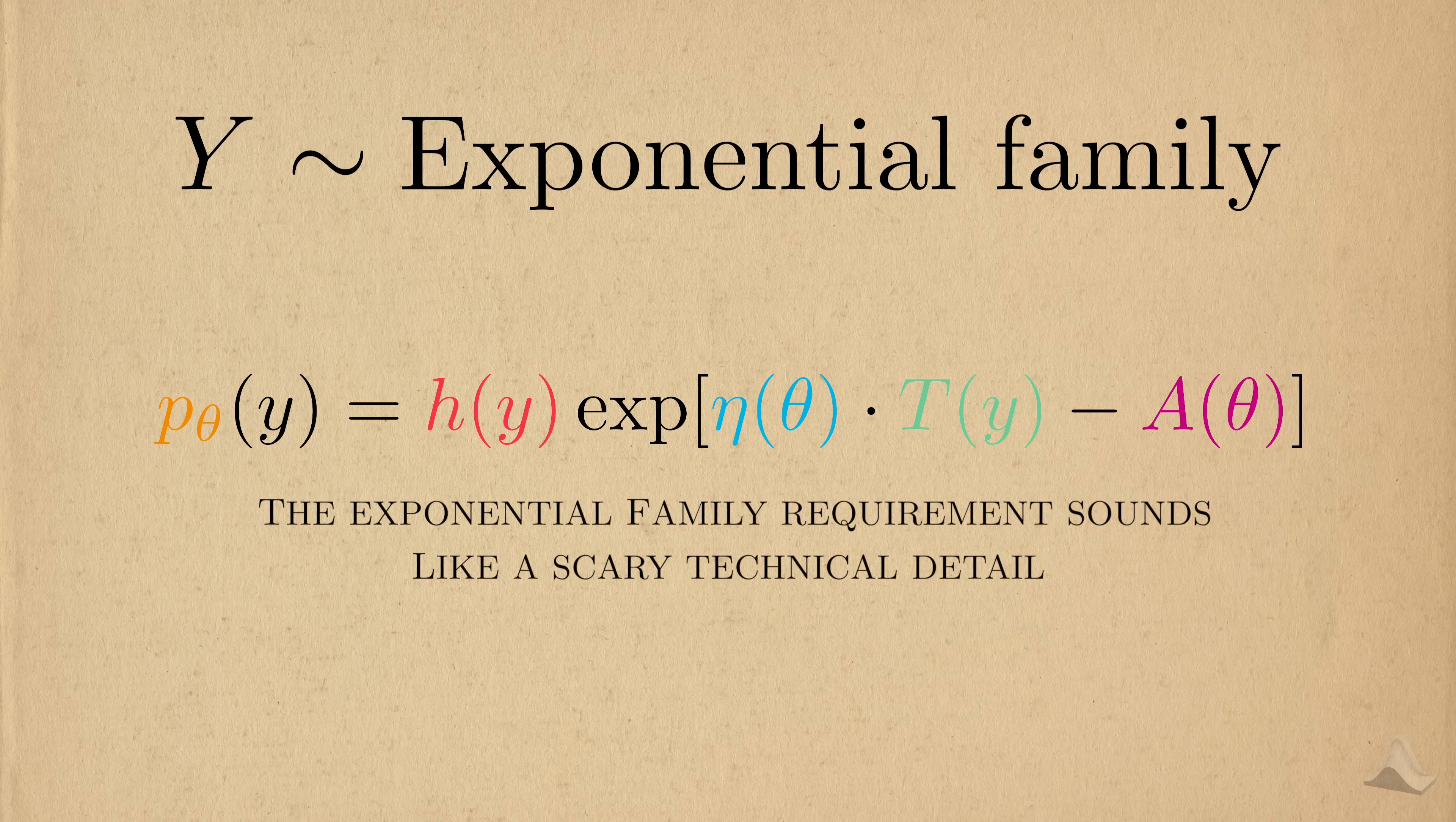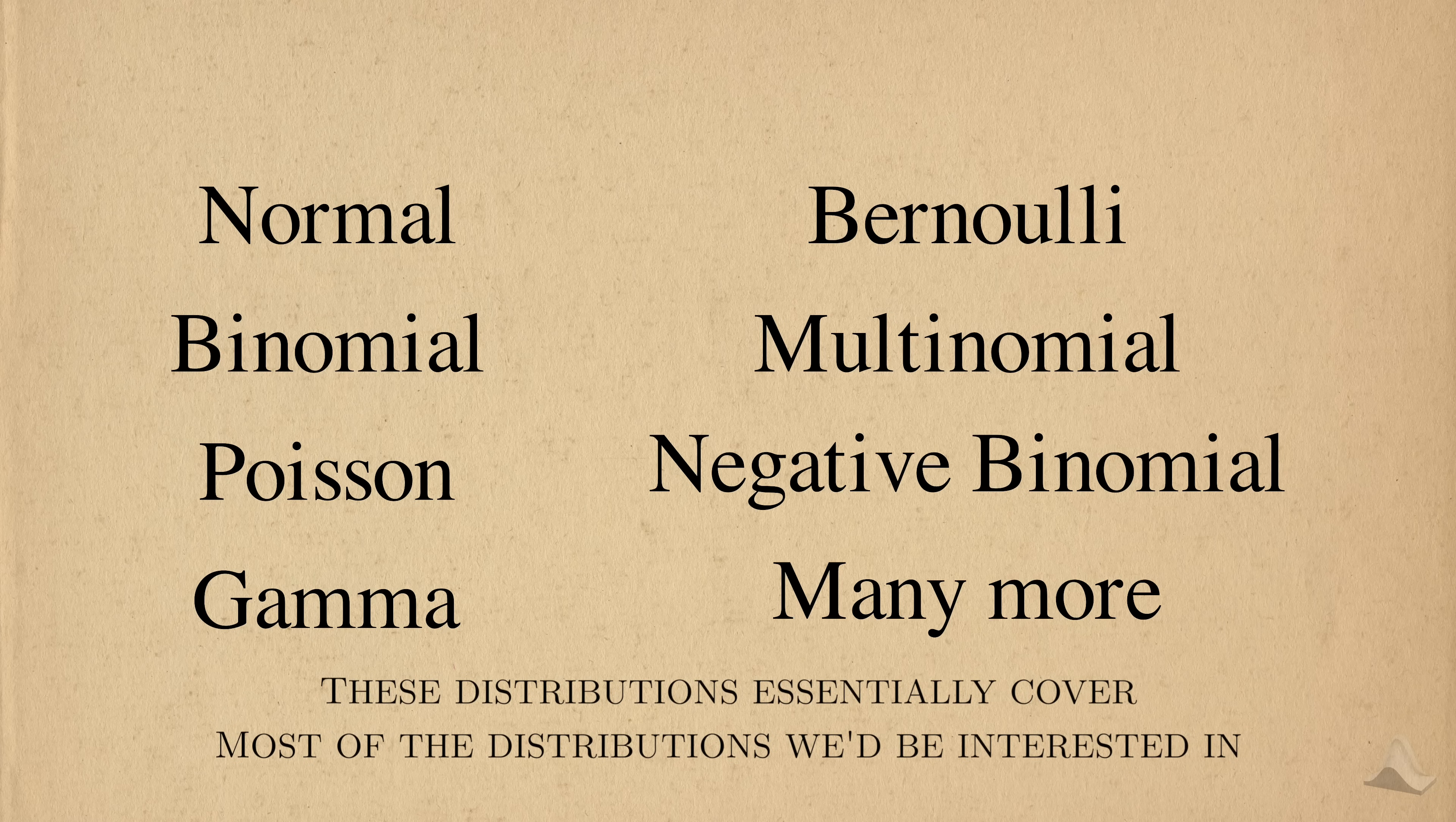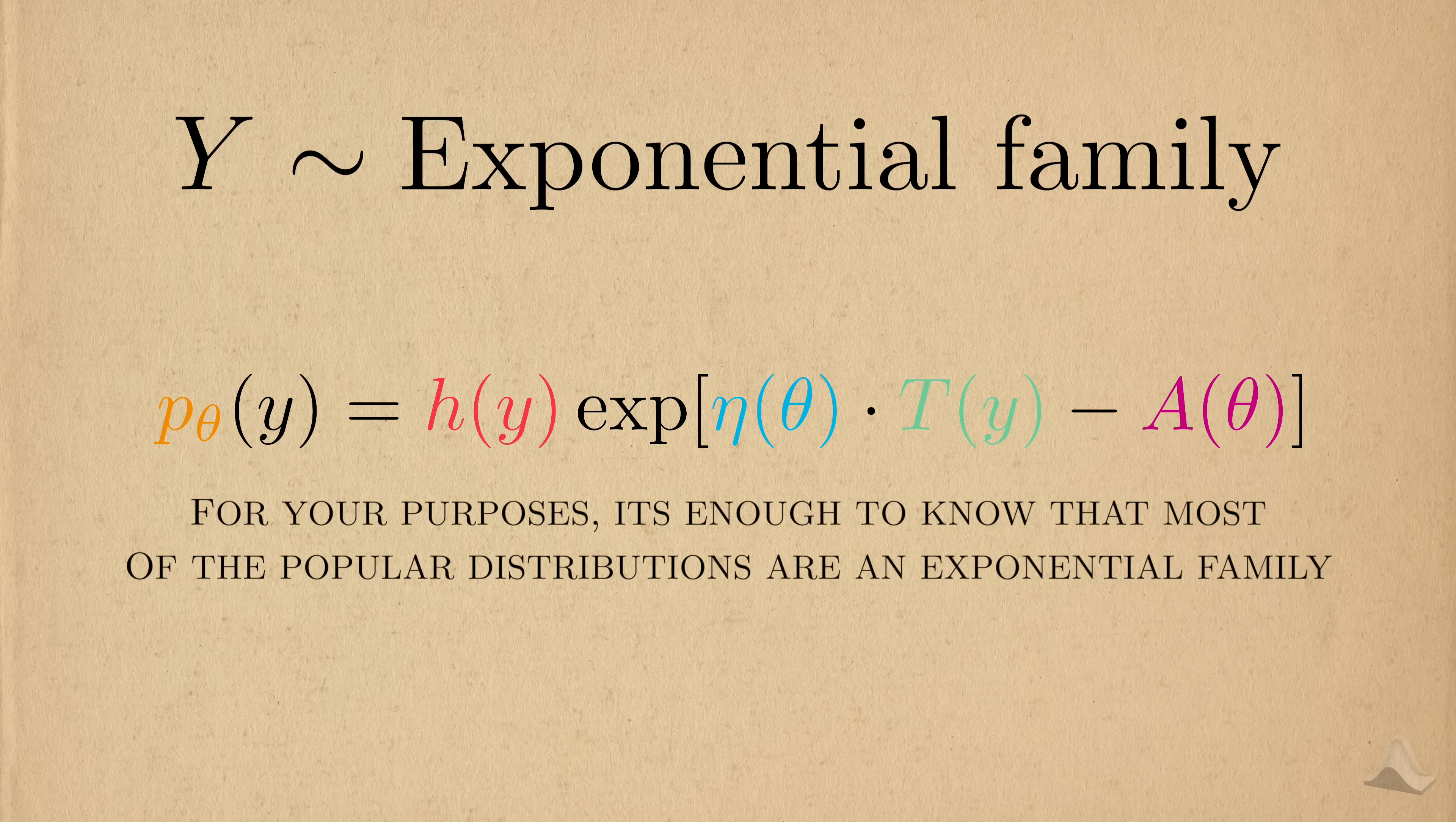The exponential family requirement sounds like a scary technical detail, but it's really not. It's more an exercise in picking a particular distribution. To drive this home, here's a list of the most commonly used exponential families in the GLM. You probably recognize a few of these. These distributions essentially cover most of the types of outcomes we'd be interested in. I'm not going to go into detail here, but exponential families also have a lot of convenient mathematical properties. For your purposes, it's enough to know that many popular distributions are also exponential families, and thus can be used in a GLM.